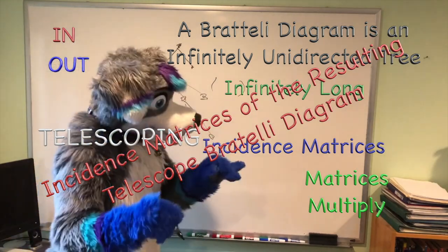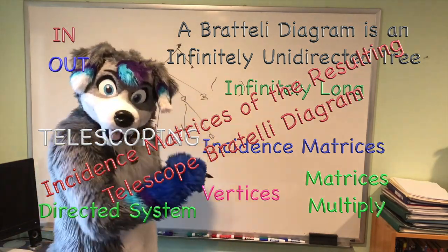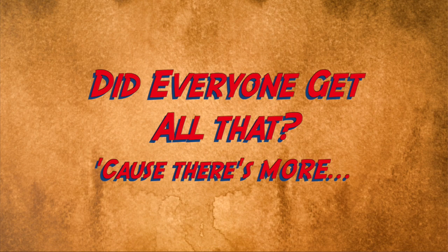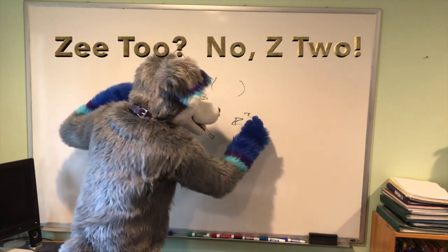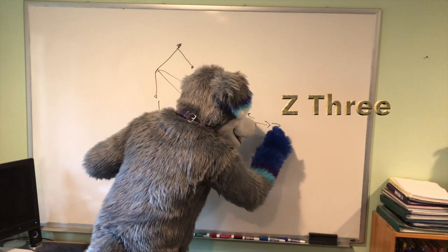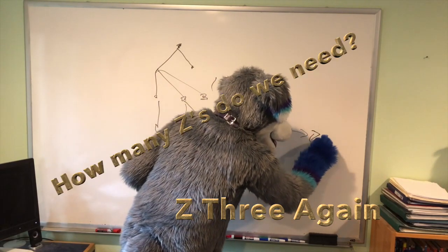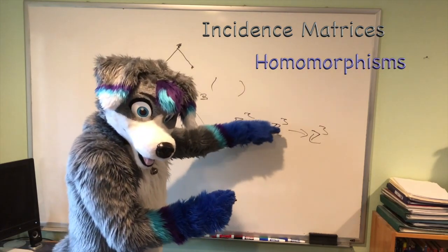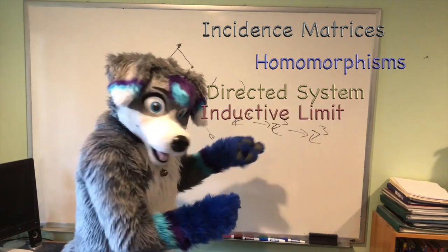And what's even more cool, and this is the really cool part, is that to any Bratteli diagram, you can take all the vertices and form a directed system from them. So you would get, like in this case, you would have Z2, and then you would have Z3, and then Z3, and then you would have Z3 here again, and so forth. And then you can put the incidence matrices, or the homomorphisms,